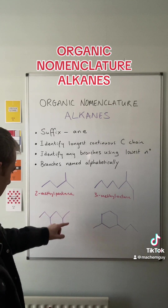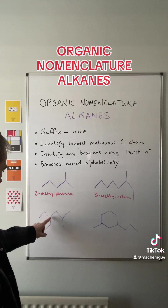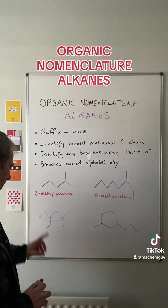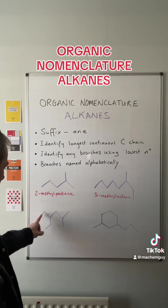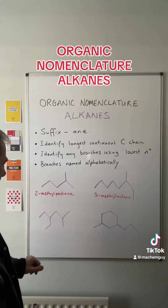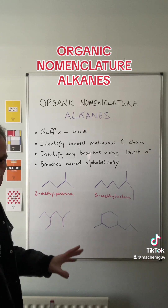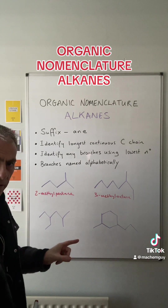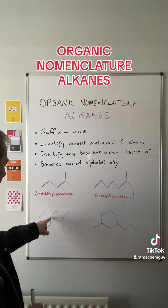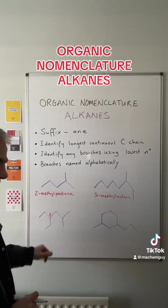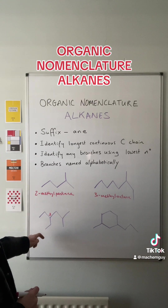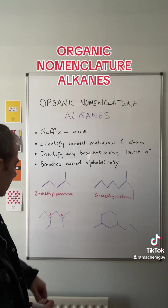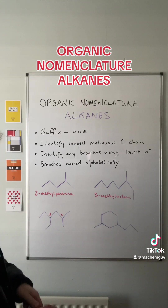For the third example, counting both ways gives six carbons each time, so the longest chain is six — hexane. There are two branches: an ethyl group on carbon three counting from one end, and a methyl group counting from the other end. We employ the alphabetical rule, so ethyl comes first. The ethyl is on carbon three, and the methyl is on carbon five, giving us 3-ethyl-5-methylhexane.